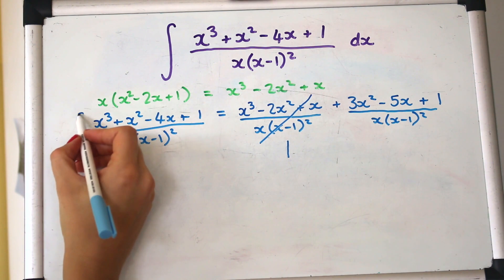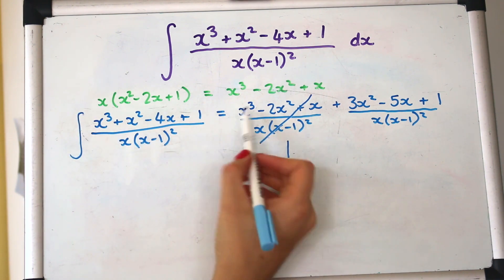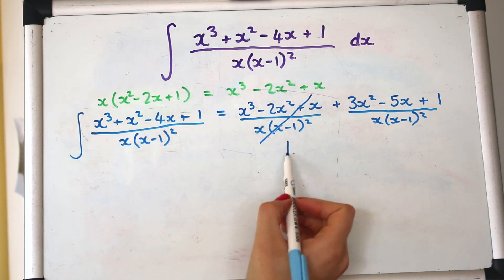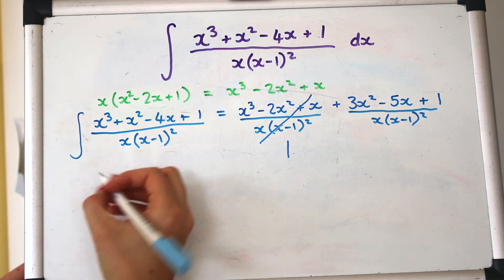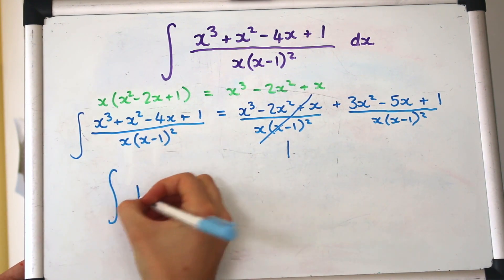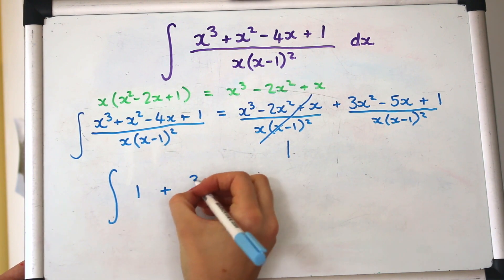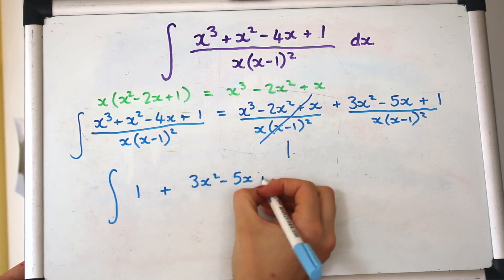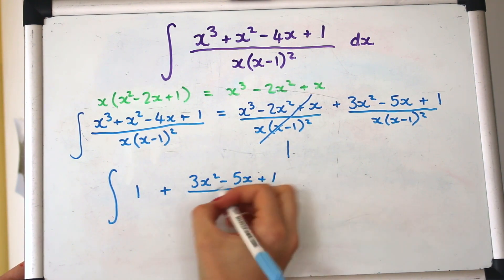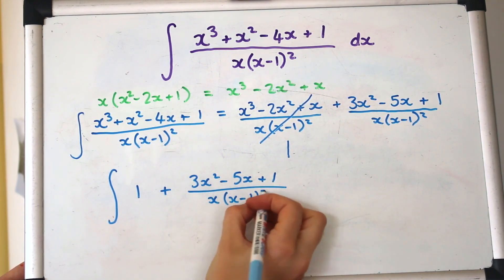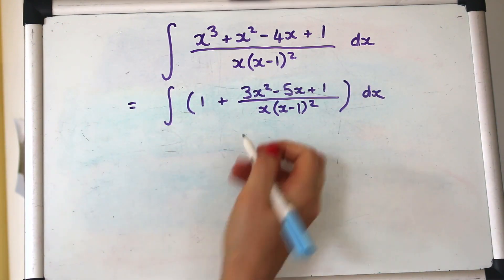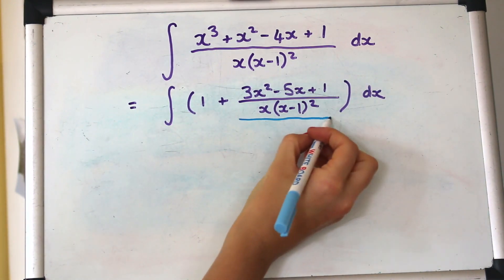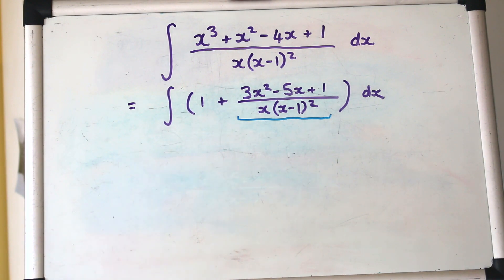So that top is the same as that so that all will cancel out to just be one. So if we're integrating all this then we can rewrite that as the integral of one plus all that jazz there. So we are integrating one plus this stuff and that's the stuff that we can now split into partial fractions.